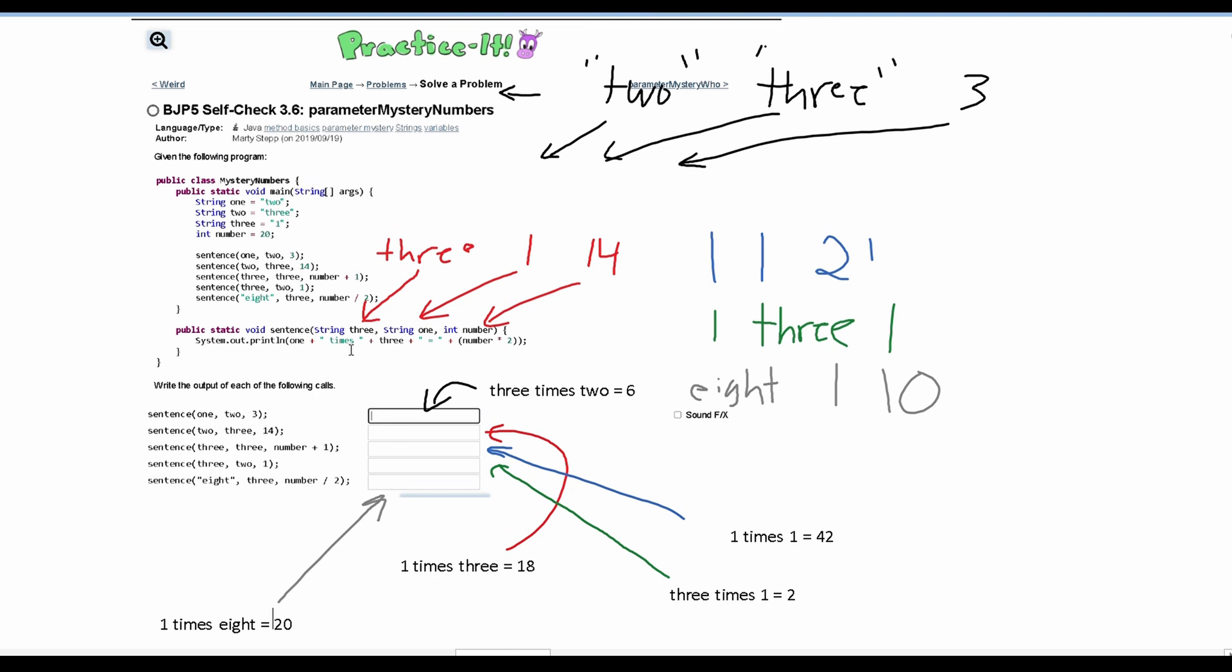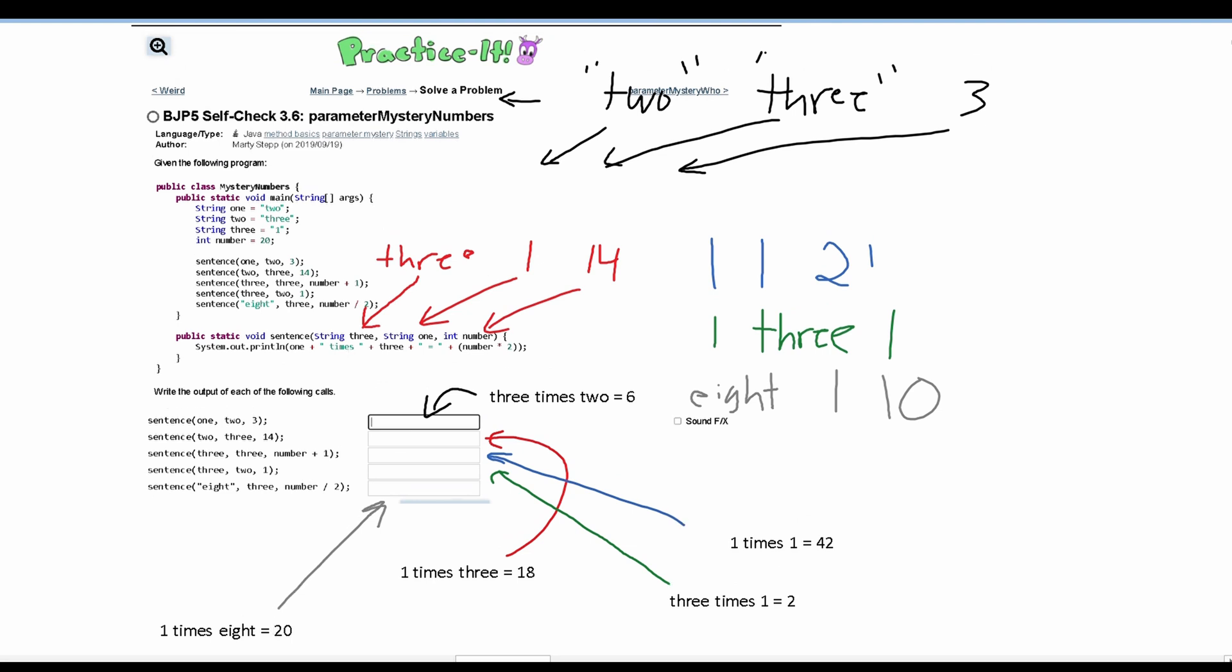I did make a mistake in the second part where I have 1 times 3 is equal to 18. Actually if we look back at what we wrote, we have 3, 1, and 14. So in here we have 1 which is the string 1, that's correct, times 3 which is 3, that's correct. And the only thing that's incorrect is this 18 right here when we have 14 times 2. So instead of being 18, this should instead be 14 times 2 which is 28, and that is the correct answer.